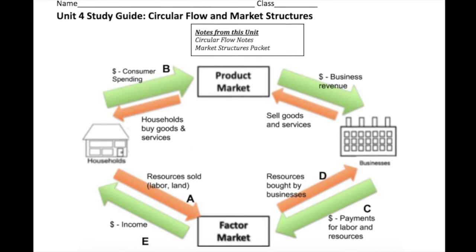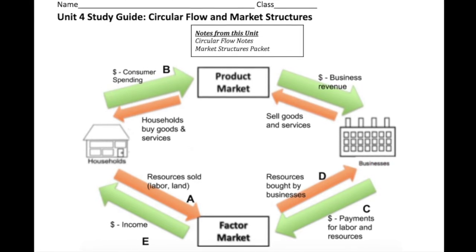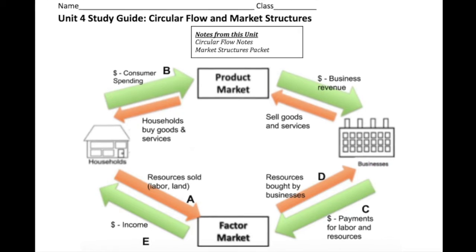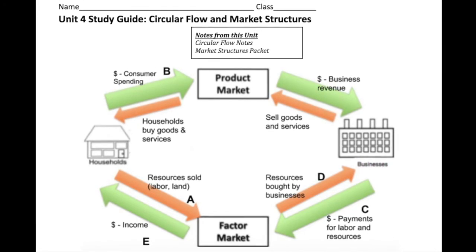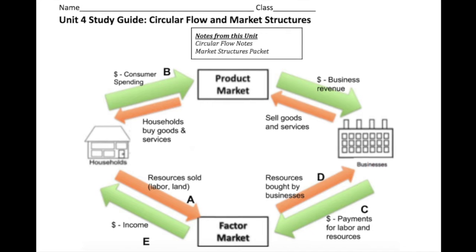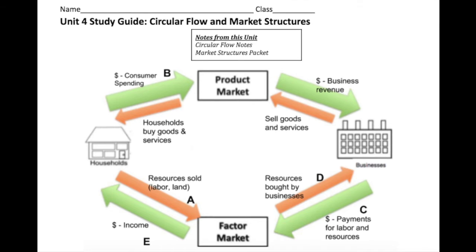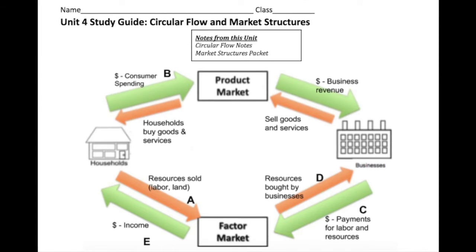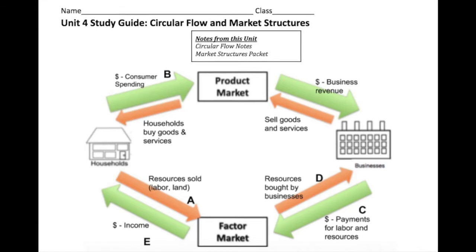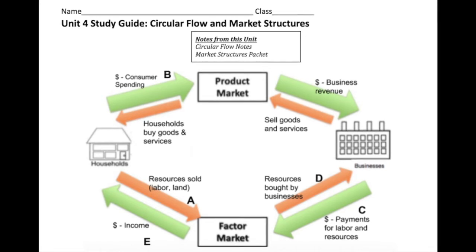C says Target uses money from sales to buy new cash registers for its stores — it's talking about money first, so that's businesses to the factor market. That arrow goes from businesses to the factor market — outside money, C. D says Mary works as an English teacher at a private school — Mary has a job, so from factor market arrow to businesses, that's where D goes. And lastly, E: Brian receives his paycheck from his job — so E is going to go from factor market, outside arrow, to households.